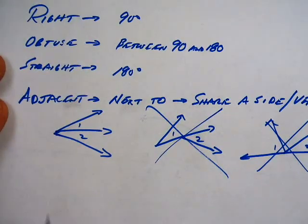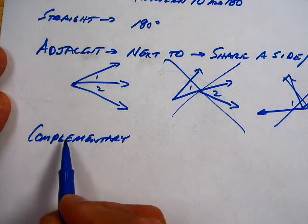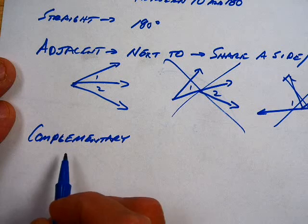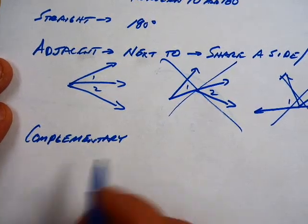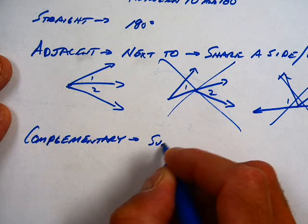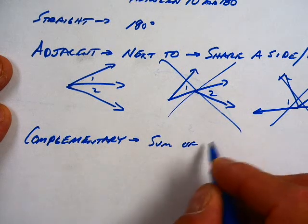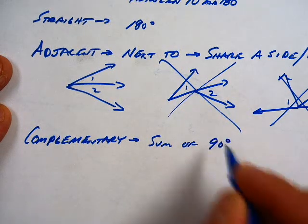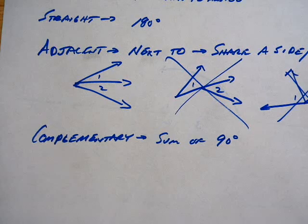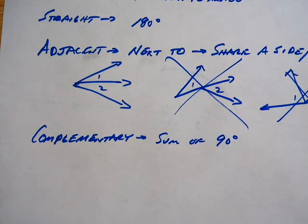Complementary angles. Complementary, first of all it's complement, not limit, it's e, not i, there's no i's in this. Complementary angles have a sum of 90.